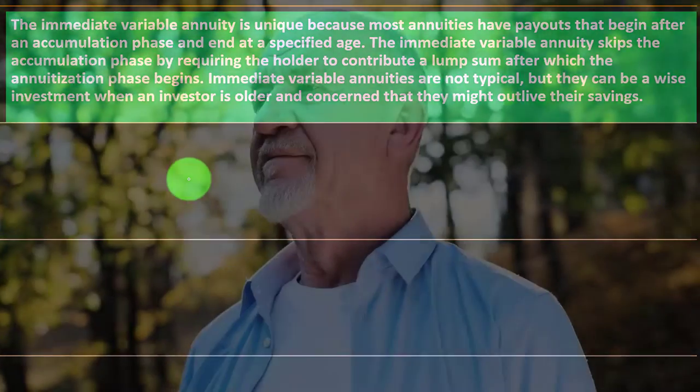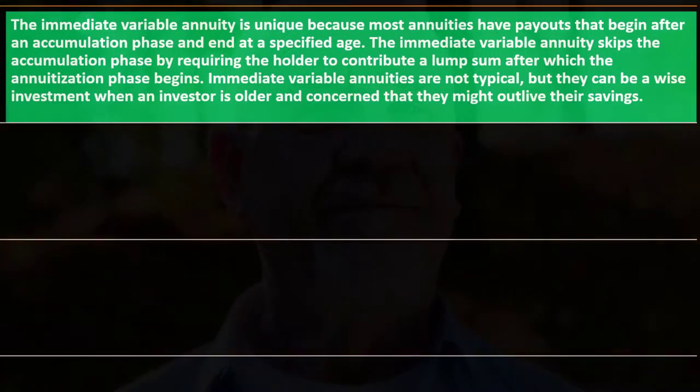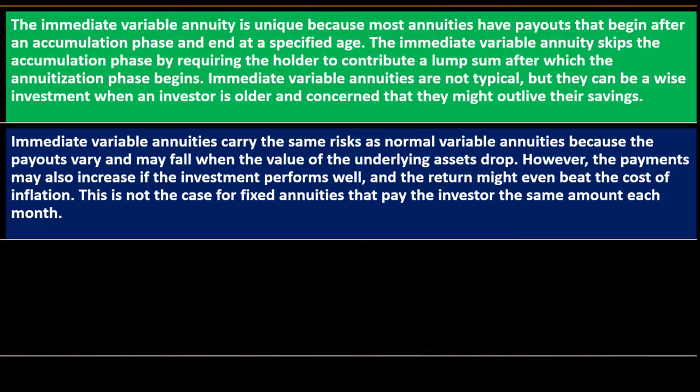Immediate variable annuities are not typical, but they can be a wise investment when an investor is older and concerned that they might outlive their savings. If you're going to live longer than expected and want to stretch your savings out, putting it into an annuity may get a little more mileage out of the nest egg.